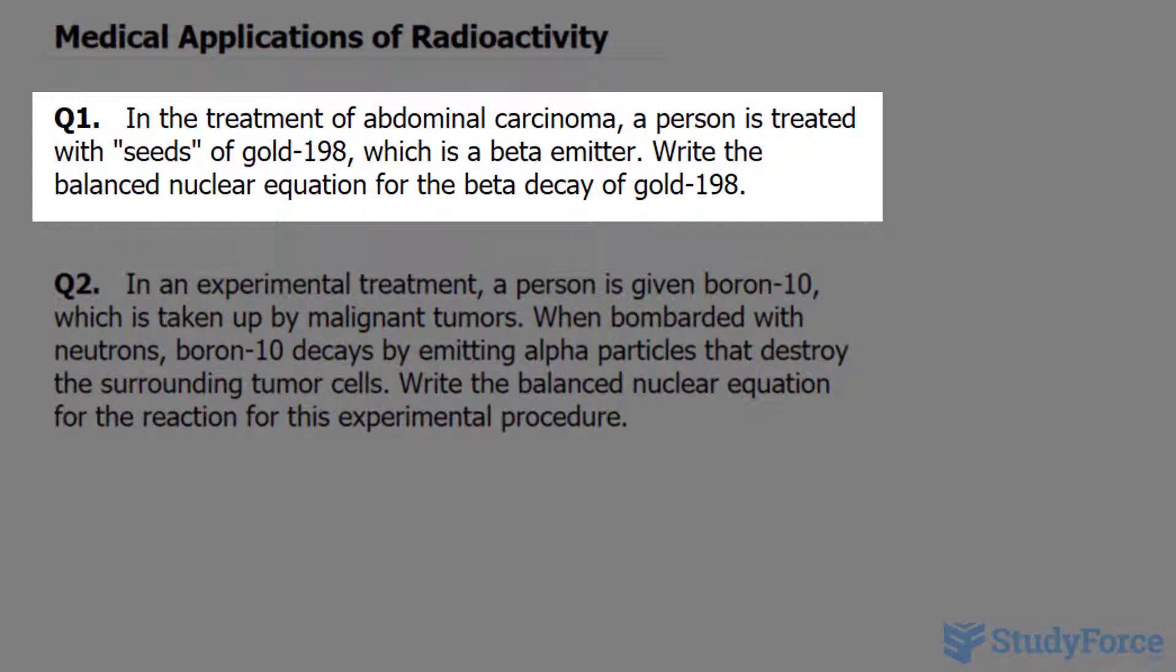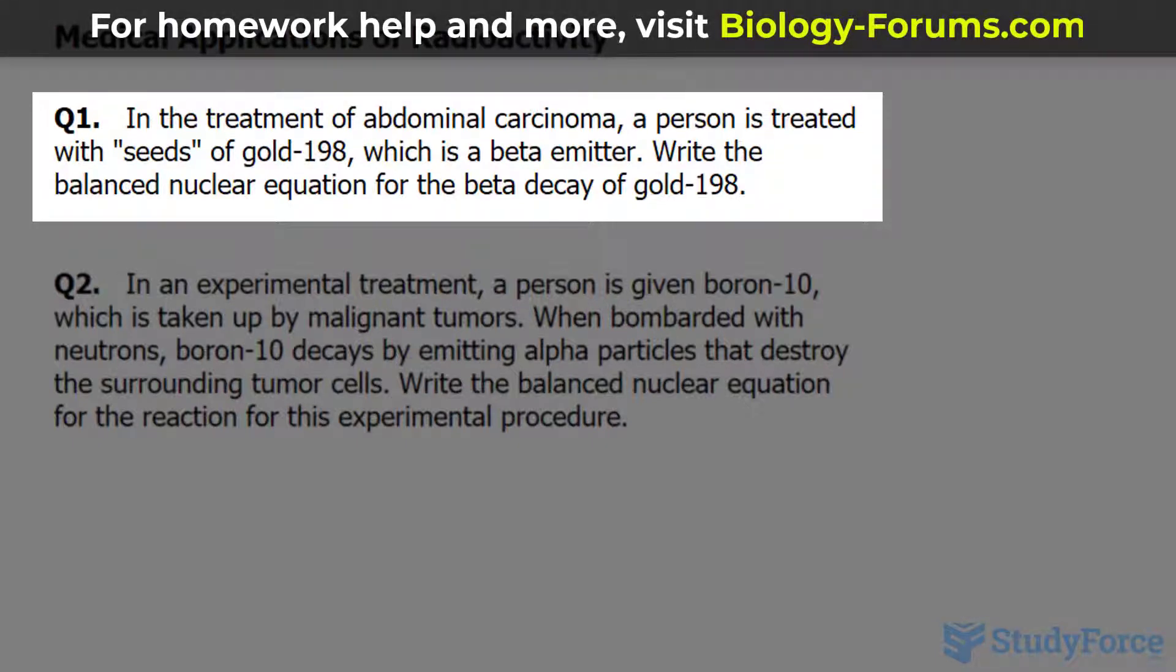Question 1 reads, in the treatment of abdominal carcinoma, a person is treated with seeds of gold-198, which is a beta emitter. Write the balanced nuclear equation for the beta decay of gold-198.